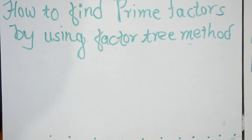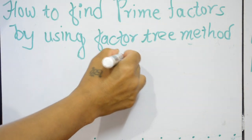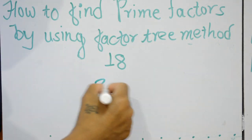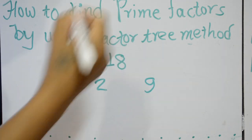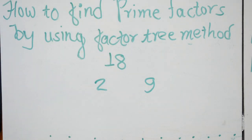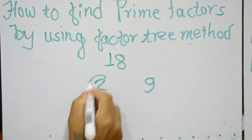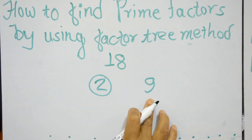Hello friends, today I am going to show you how to find prime factors by using factor trees. Look at this example: 18. It is a composite number, so we have to write the factors of 18 first — 2 times 9. A prime number has exactly two factors: one and the number itself. 2 is a prime number, so let's circle it.